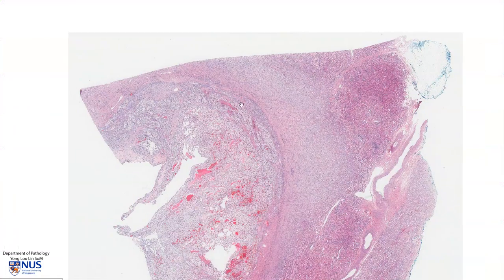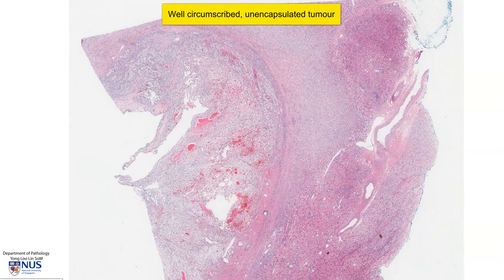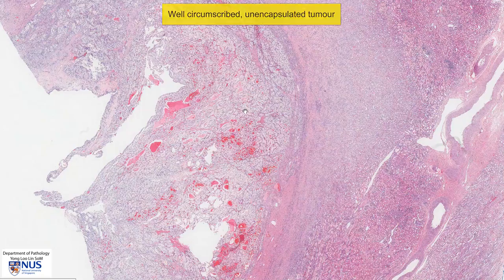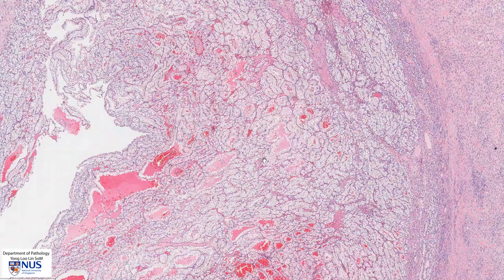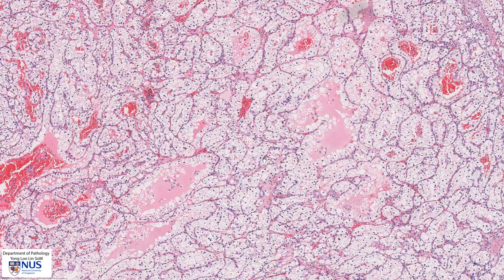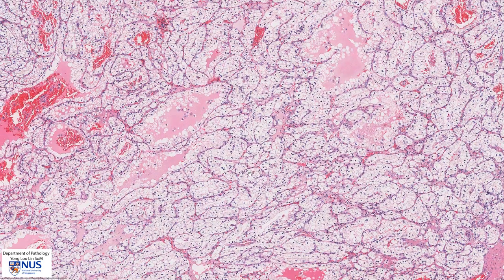Moving on to the area of the tumor, we can see at low magnification that it is relatively well-circumscribed. However, there is no well-defined fibrous capsule.